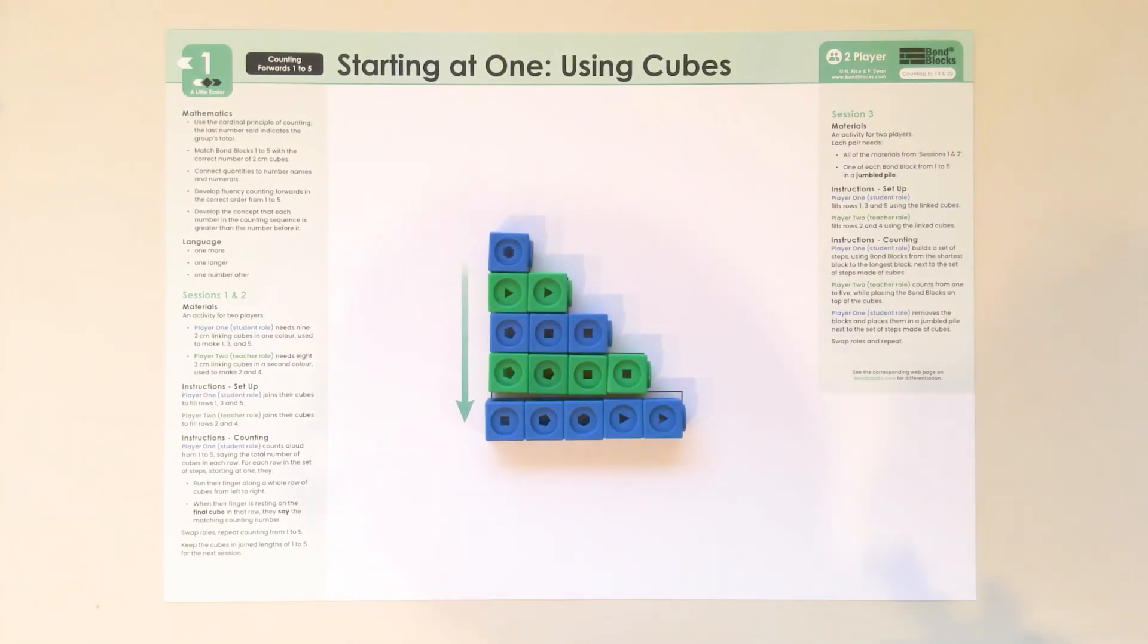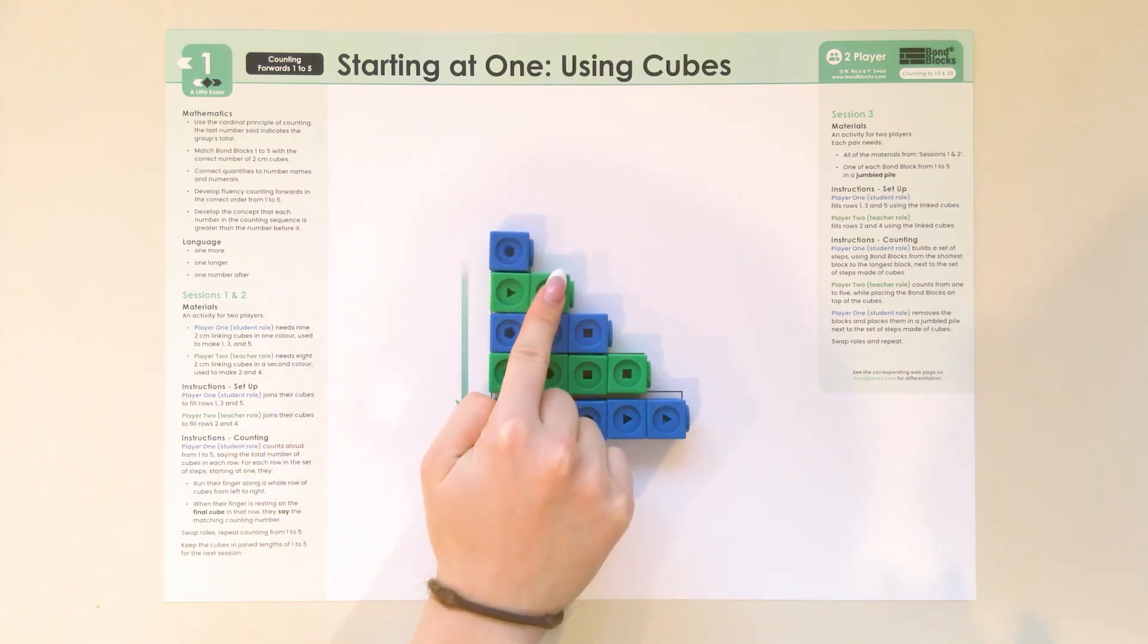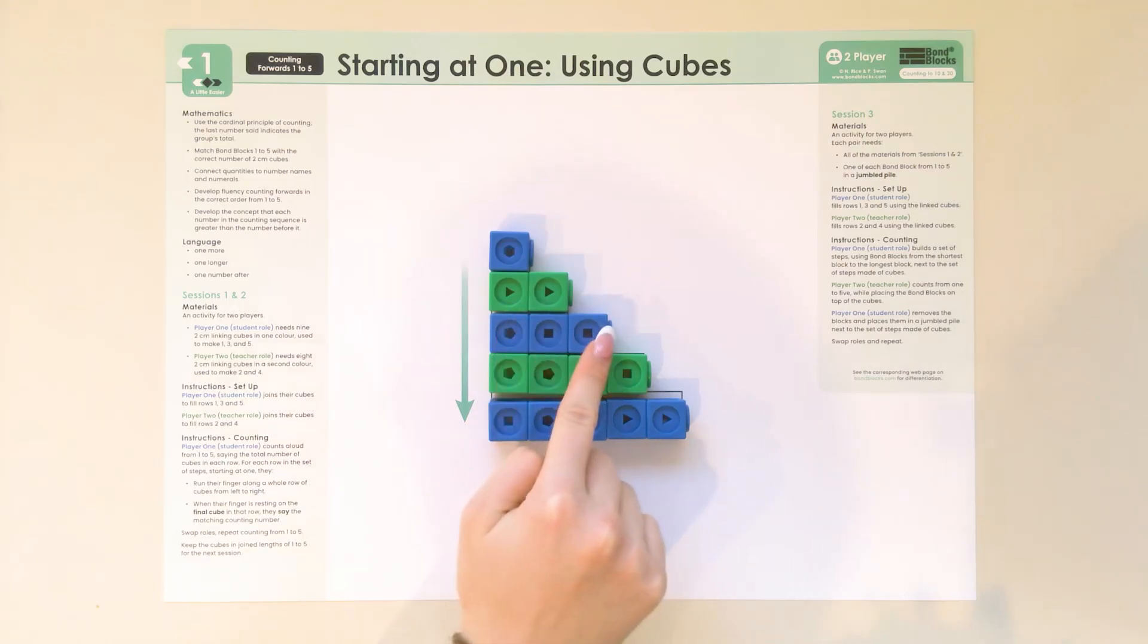Karis, can you go first? One, starting at this side, sliding my finger all the way along. Two, three, four, five. Well done.